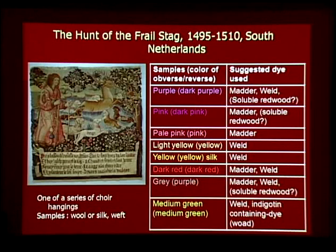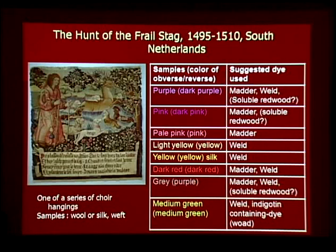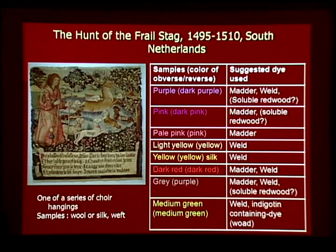This tapestry is one of a series of choir hangings, probably made in the South Netherlands about 1500. The major dyes used are those three principal dyes, but for more conclusive results, further analysis from other hangings in the same series needs to be done, because the past restoration on this tapestry is very disguising and it is very difficult to visually differentiate it from the original. Taking original samples has been a problem.